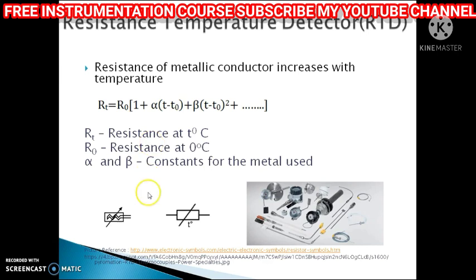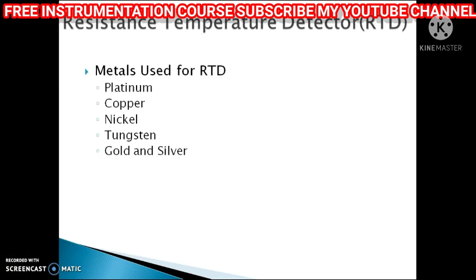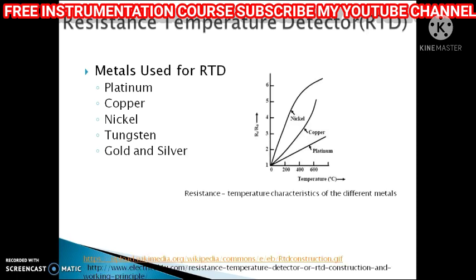This is the symbol of the RTD detector and this is how it practically looks. The conduction material used for RTD should possess high resistivity so that minimum volume is required for manufacturing. The noble metal platinum is used because it does not oxidize with the material being tested, and it also withstands a very high temperature range.